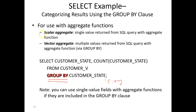This slide talks about scalar aggregate and vector aggregate. A scalar aggregate gives you only one result, while a vector aggregate gives you multiple values in the result. The way to get a vector aggregate is to use the GROUP BY clause — if you group by customer state, for each state you get a result. Without GROUP BY, you get just one result for the whole table.